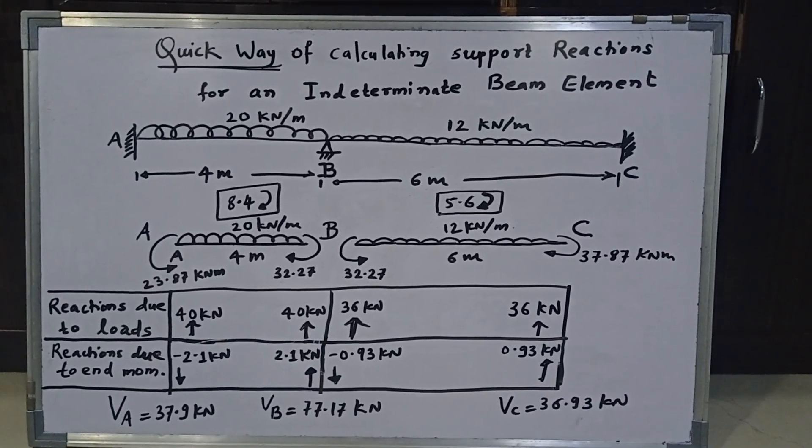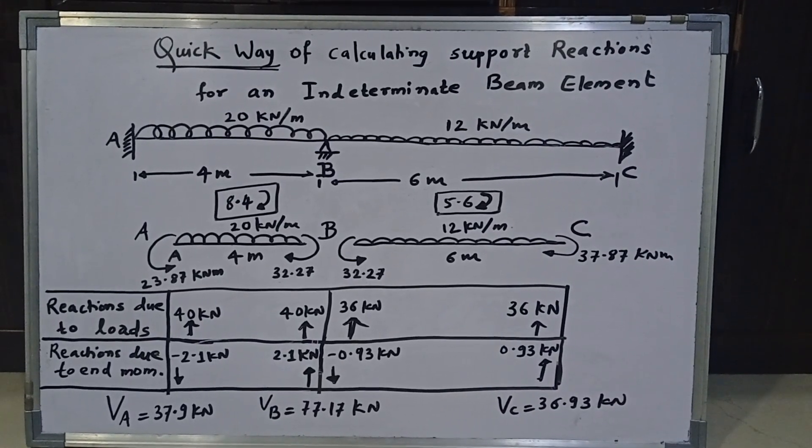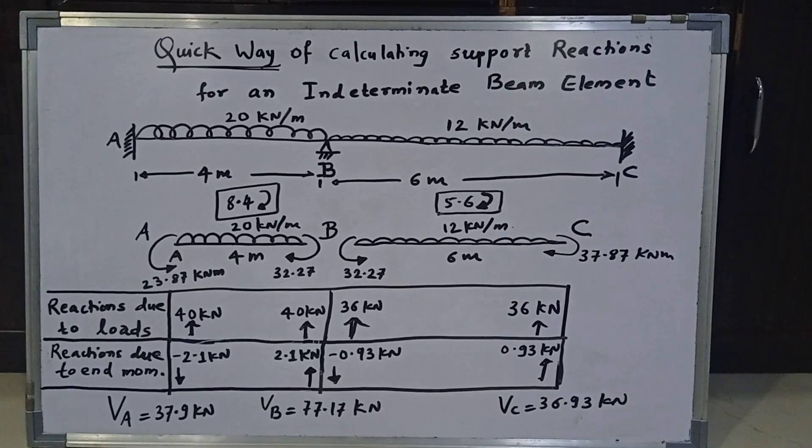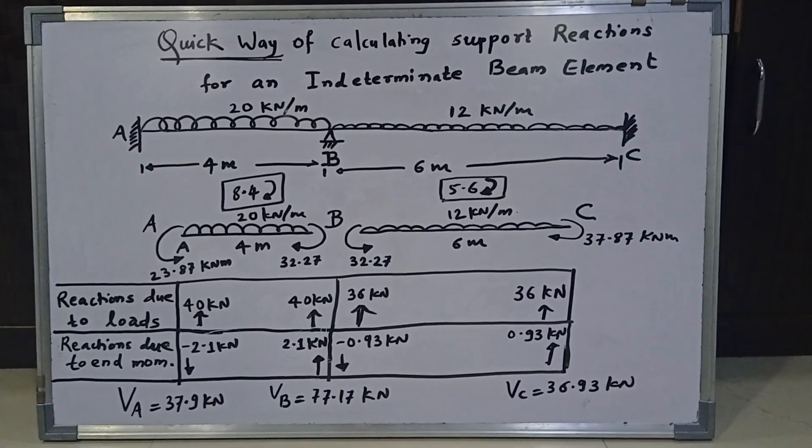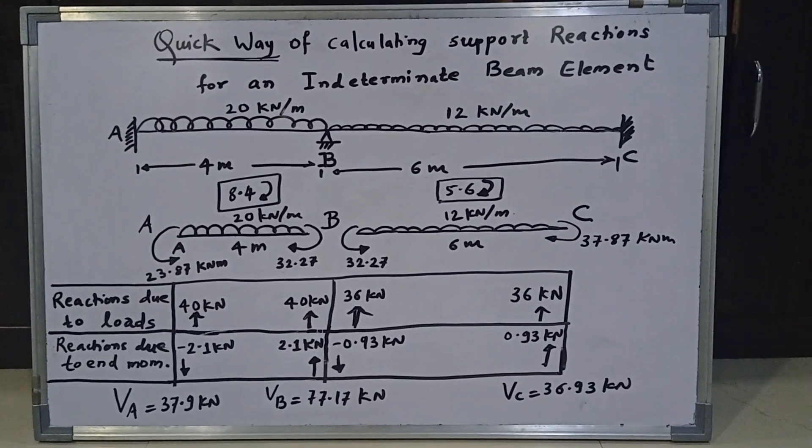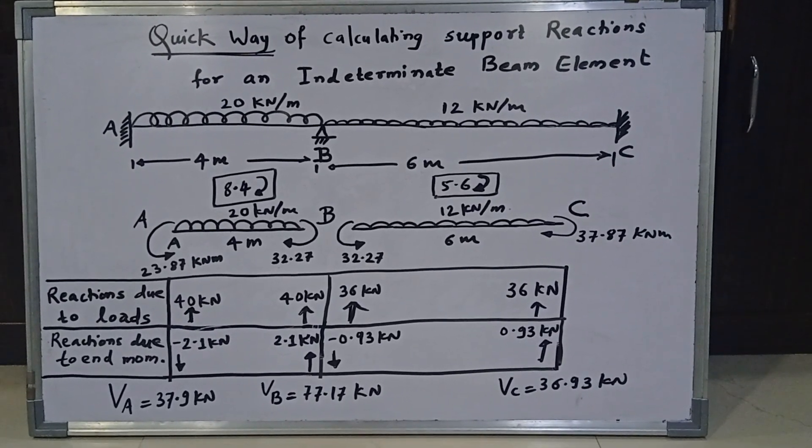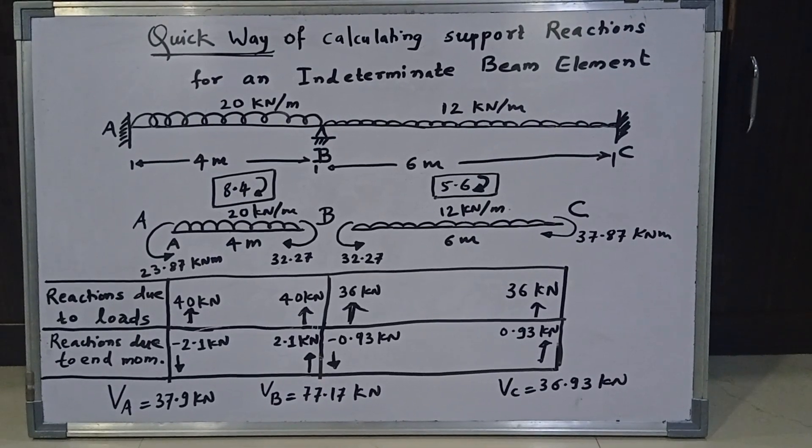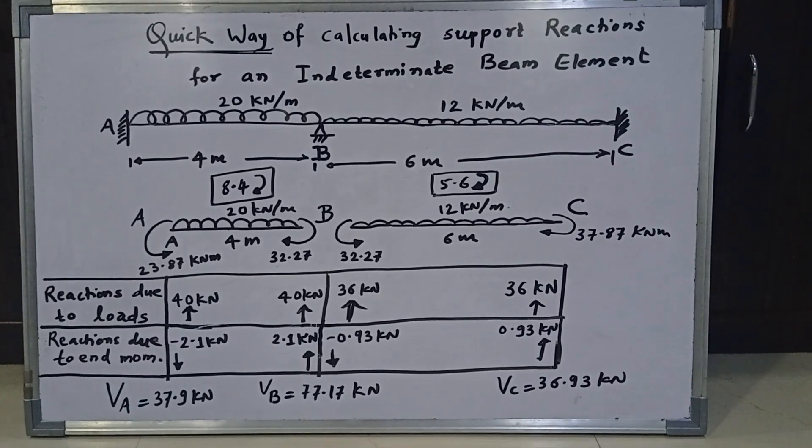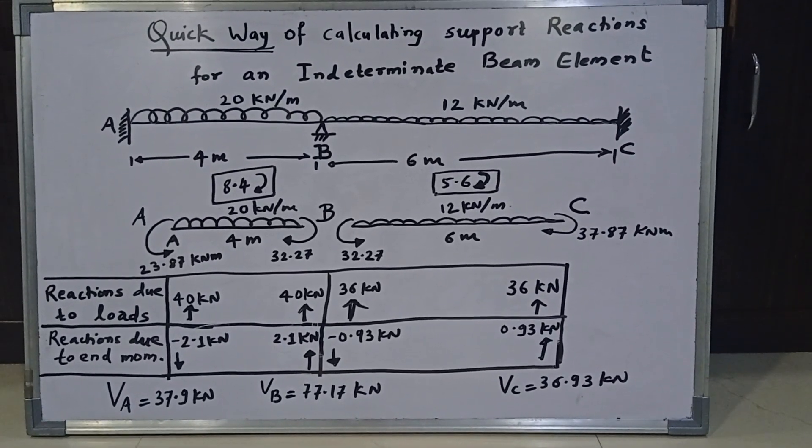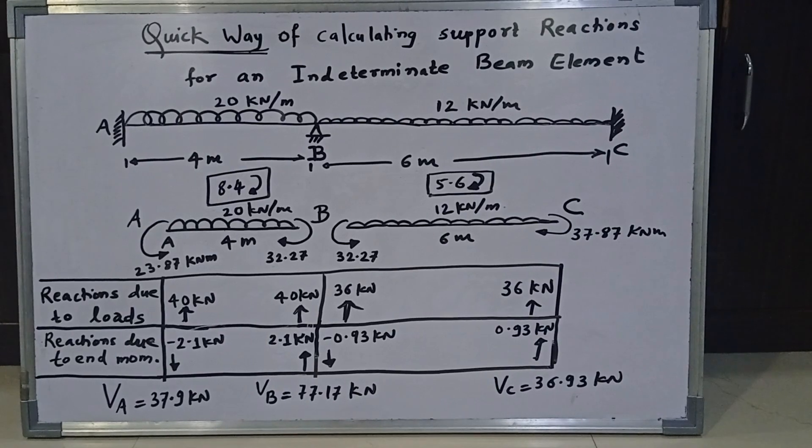Now suppose this beam I have already analyzed by some method. For example, I have analyzed it by moment distribution method. And already I have got the end moments after carrying out the necessary steps in moment distribution table. So if you see figure number 2 that is below figure number 1, we can clearly see the end moments at A, B and C. So the end moment at A, MA is 23.87 kN meter hogging. At B, it is 32.27 kN meter hogging. And at C, it is 37.87 kN meter hogging.